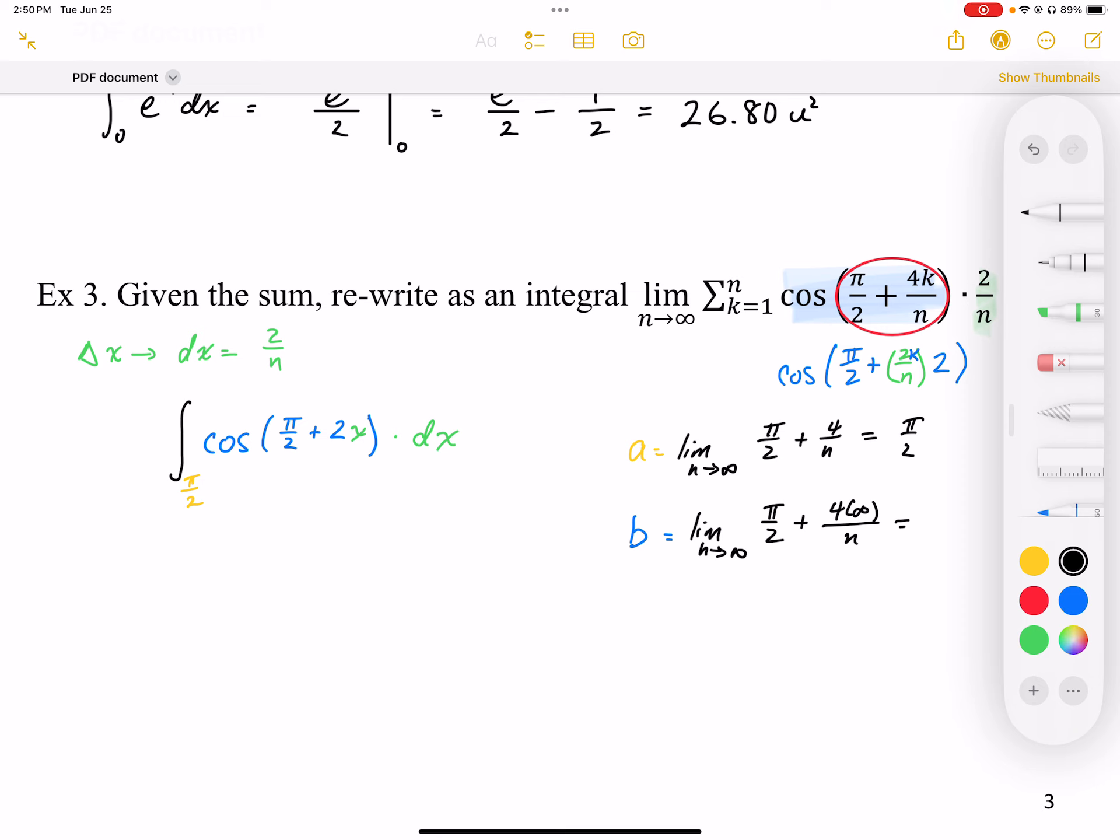this becomes pi over 2 plus 4x, plus 4. So pi over 2 plus 4 is my upper bound.